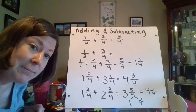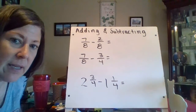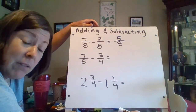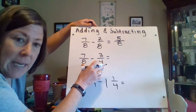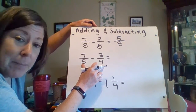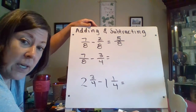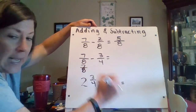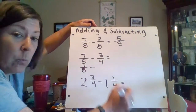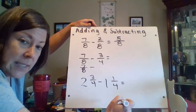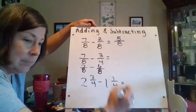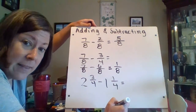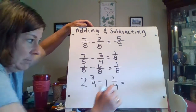Now let's move to some subtracting. My first example, I have apples to apples: 7 eighths minus 2 eighths is simply 5 eighths. My next example, I have 7 eighths minus 3 fourths — not apples to apples. The common denominator for 4 and 8 is 8. I keep the 7 eighths, and 3 fourths is equal to 6 eighths. 7 eighths minus 6 eighths is 1 eighth. So 7 eighths minus 3 fourths equals 1 eighth.